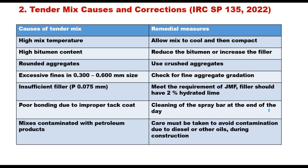IRC SP 135:2022 identifies the causes and remedial measures for tender mix. If the mix temperature is high, allow the mix to cool before compacting. If the mix is tender because of high binder content, reduce the binder content or increase the filler content. If rounded aggregates are used, the mix is certain to be tender — always use crushed aggregates. Excessive fines in the range of 0.3 to 0.6 mm size can also create tenderness, so it is important to check the fine aggregate gradation.